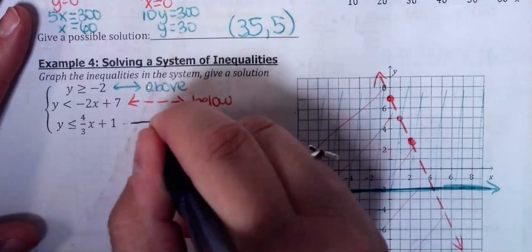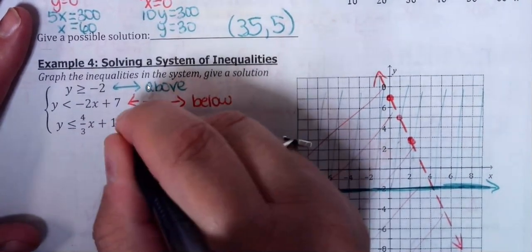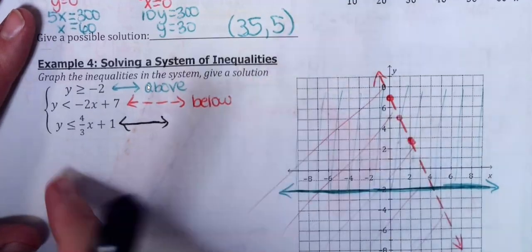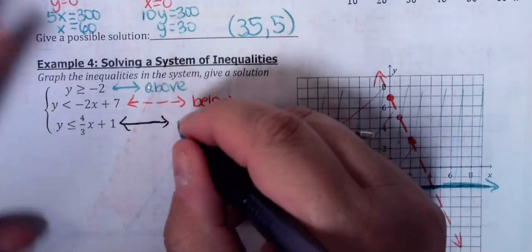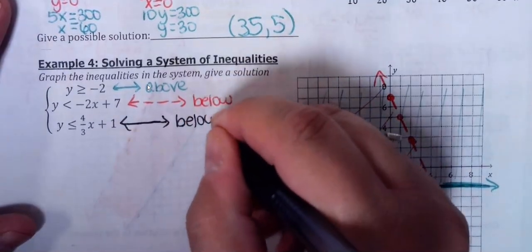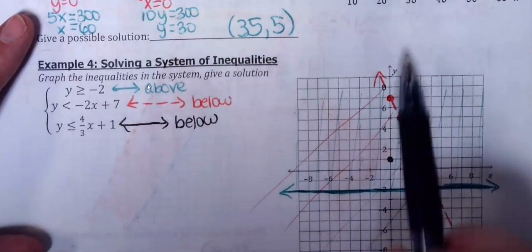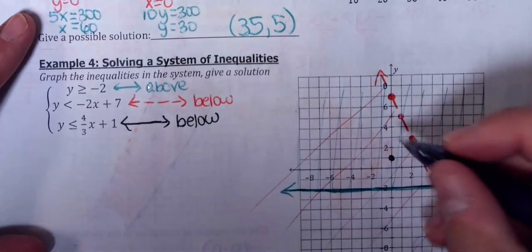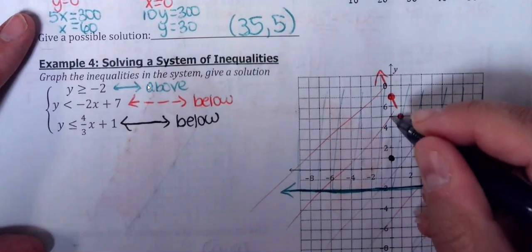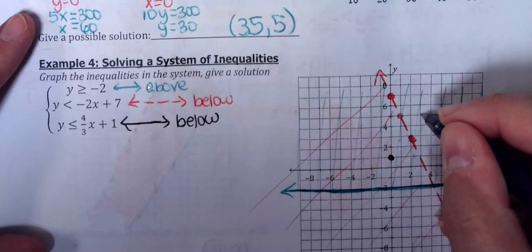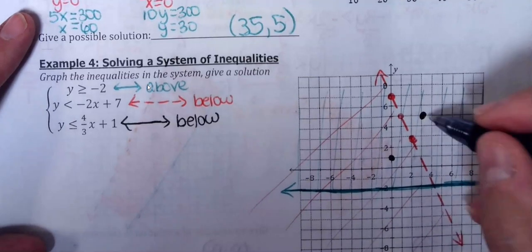This is less than or equal to. And so it's going to be a solid line. If you see it, it's solid. And less than is going to go below. So we're going to start that at 1 on the y-axis. And our slope is up 4, 1, 2, 3, 4 over 1, 2, 3. And if you want to do a couple, 1, 2, 3, 4, 1, 2, 3.